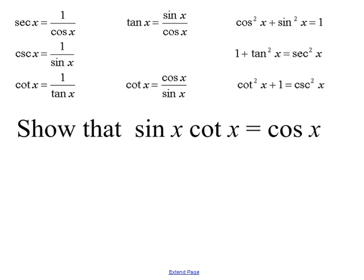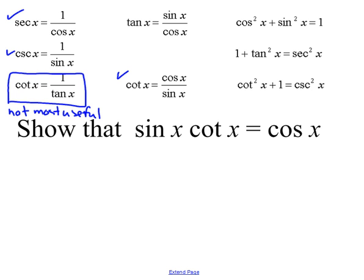The 8 identities at the top you need to memorize — you have to have them. For now they're going to be on the slide, but when we get to the quiz or test on this, you need to have these in your head. The most important ones are these two. This one is sometimes useful but not the most useful. The substitution for cotangent — this one is the most useful right there.